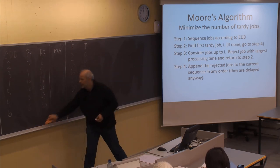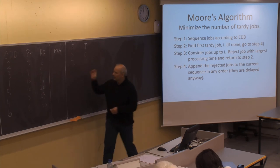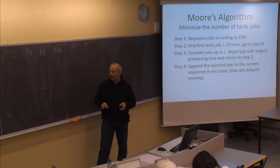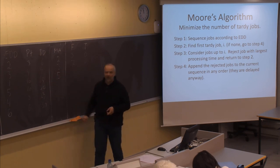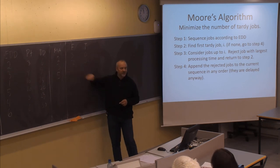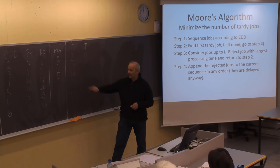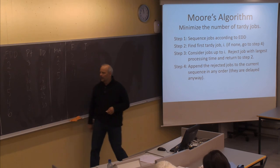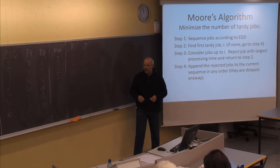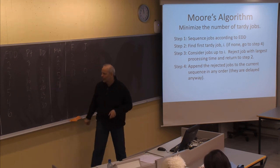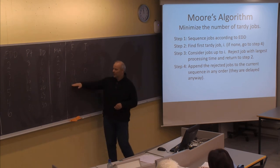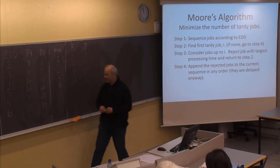With the new sequence, we still start with job number 2, then job number 3. We reject job number 1, so the next job is job number 5. Job number 5 takes 10 days, starting on day 7, finished by day 17. Day 17 is before day 20, so it is still in time. Next is job number 4, which takes 8 days. 8 plus 17 gives 25. Again we have a problem — this job is finished after the due date of 23.